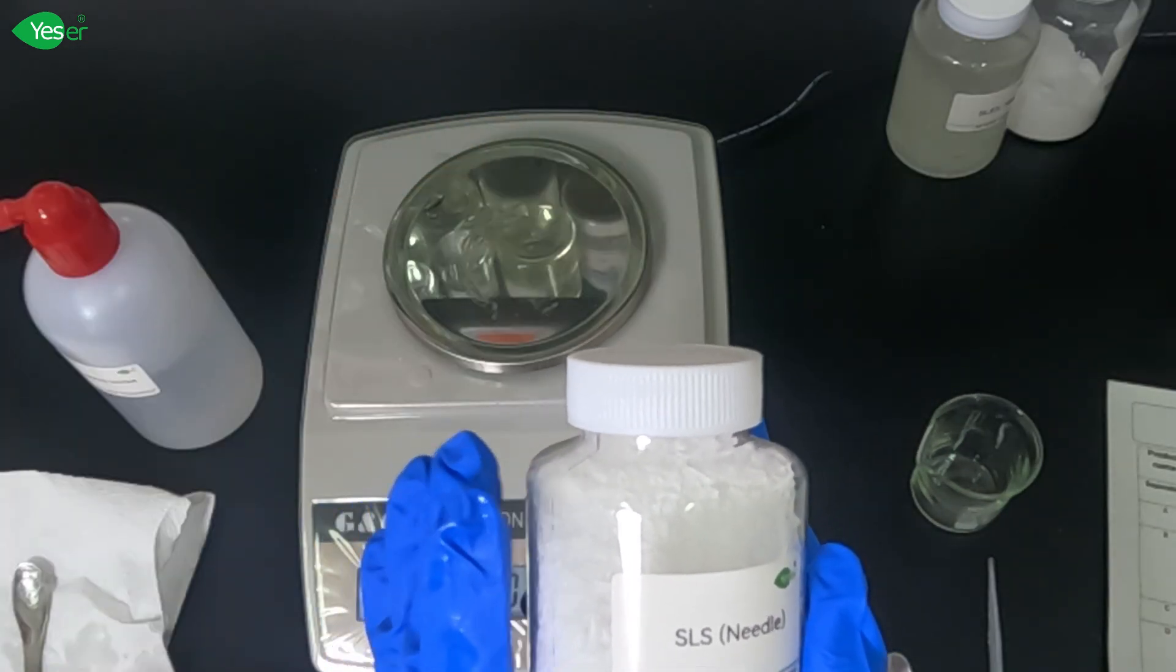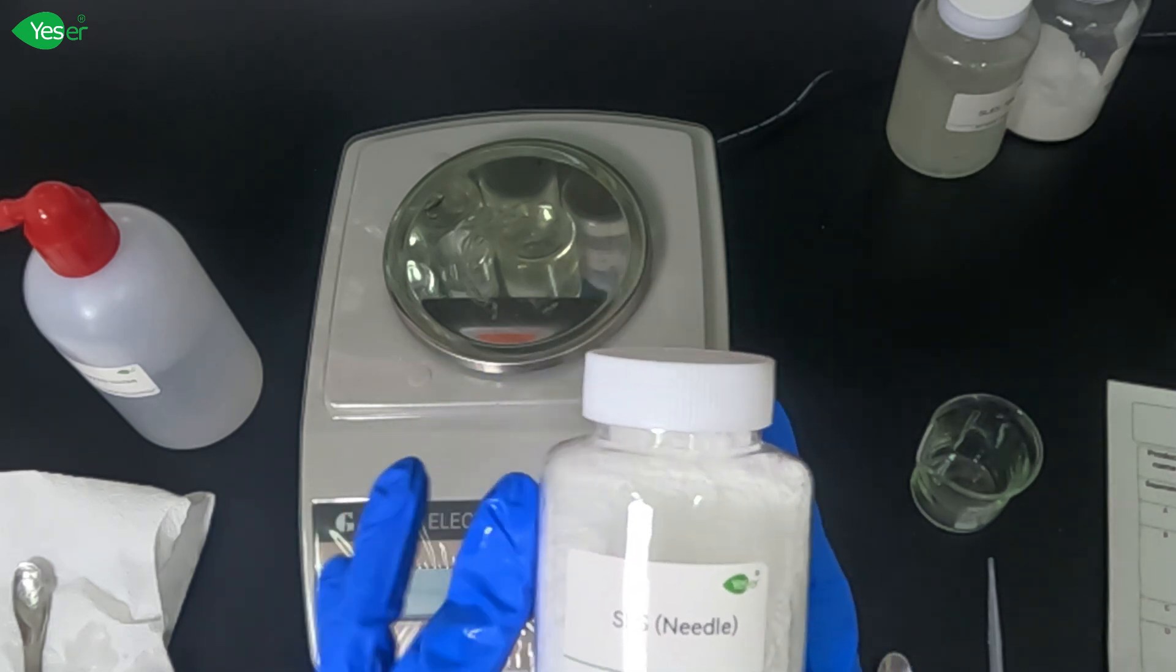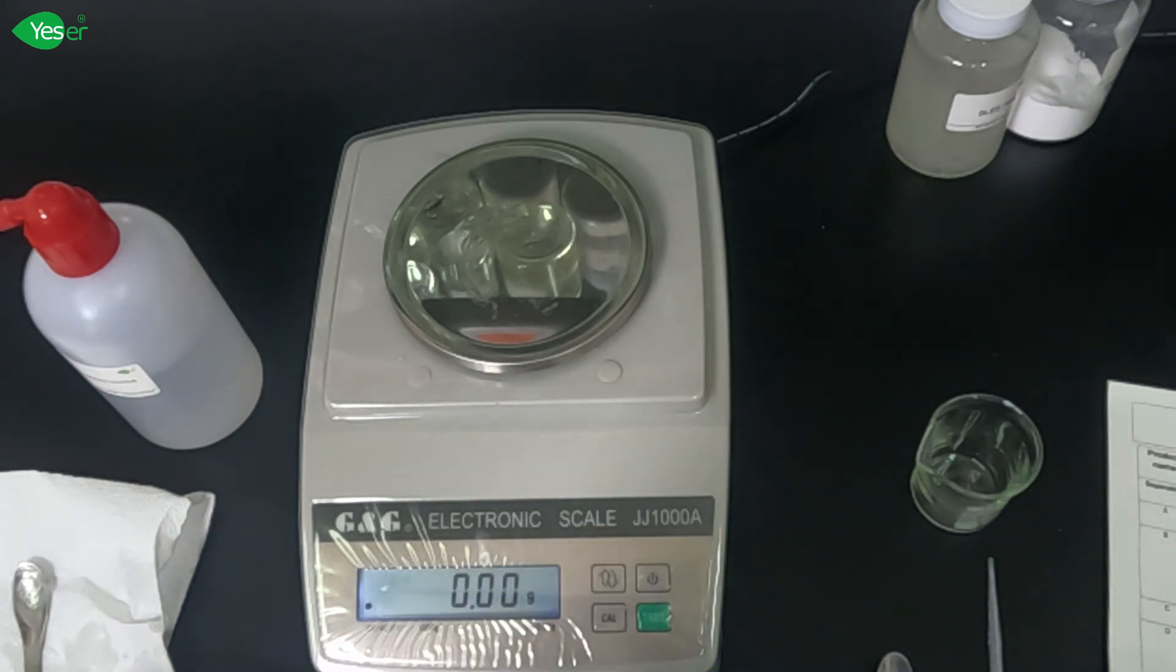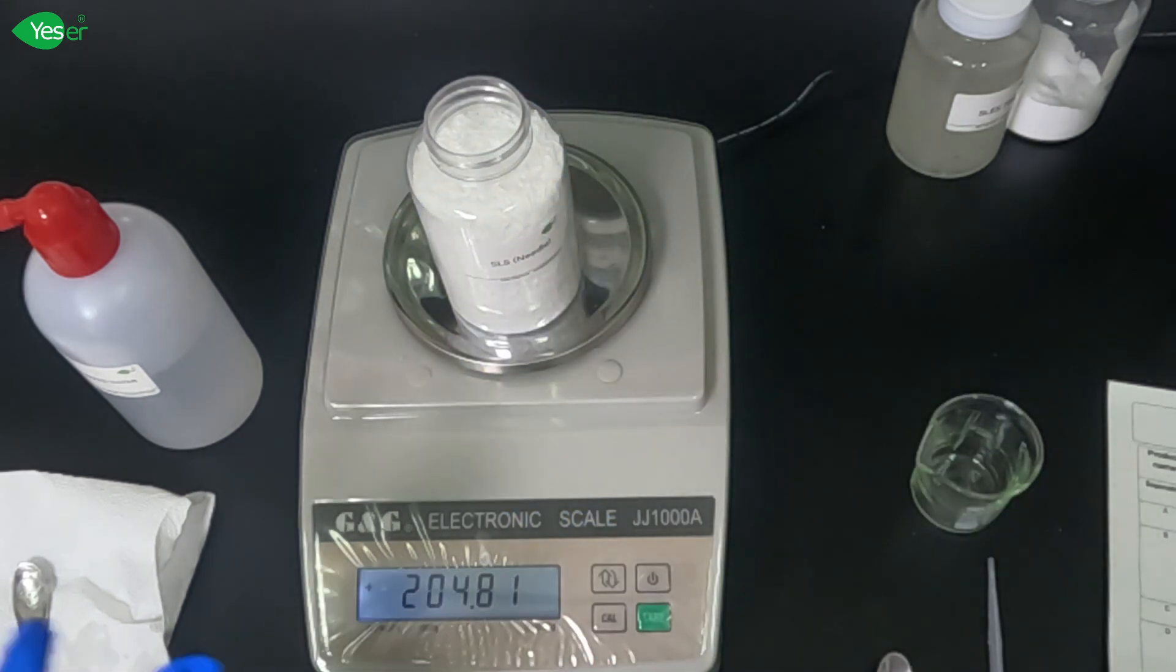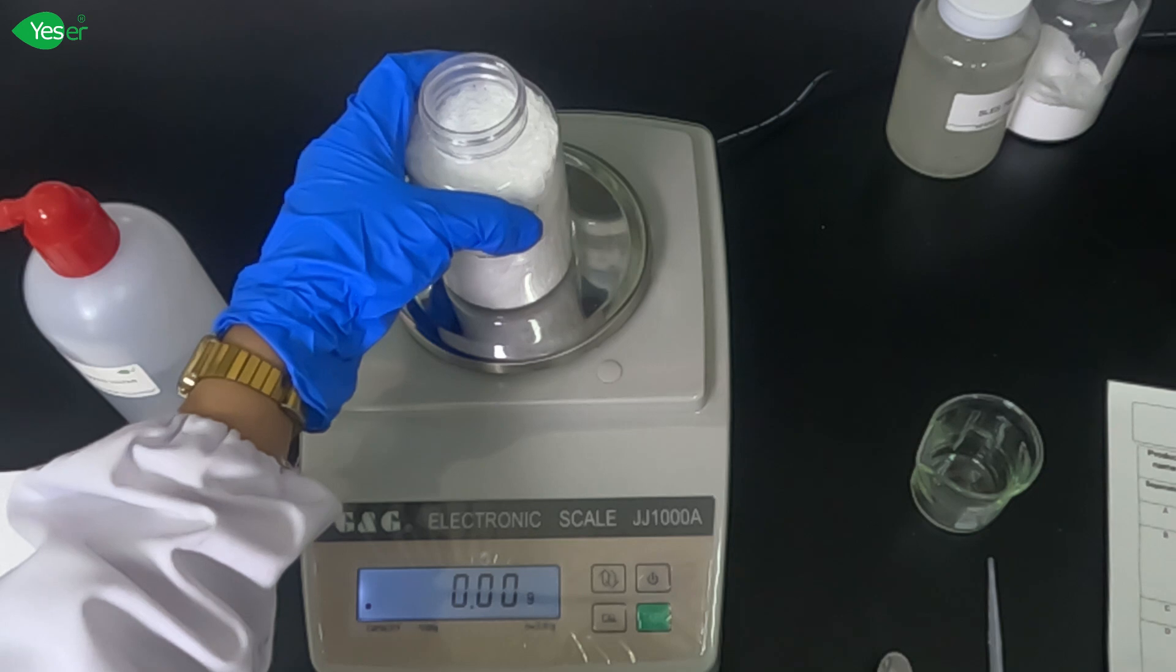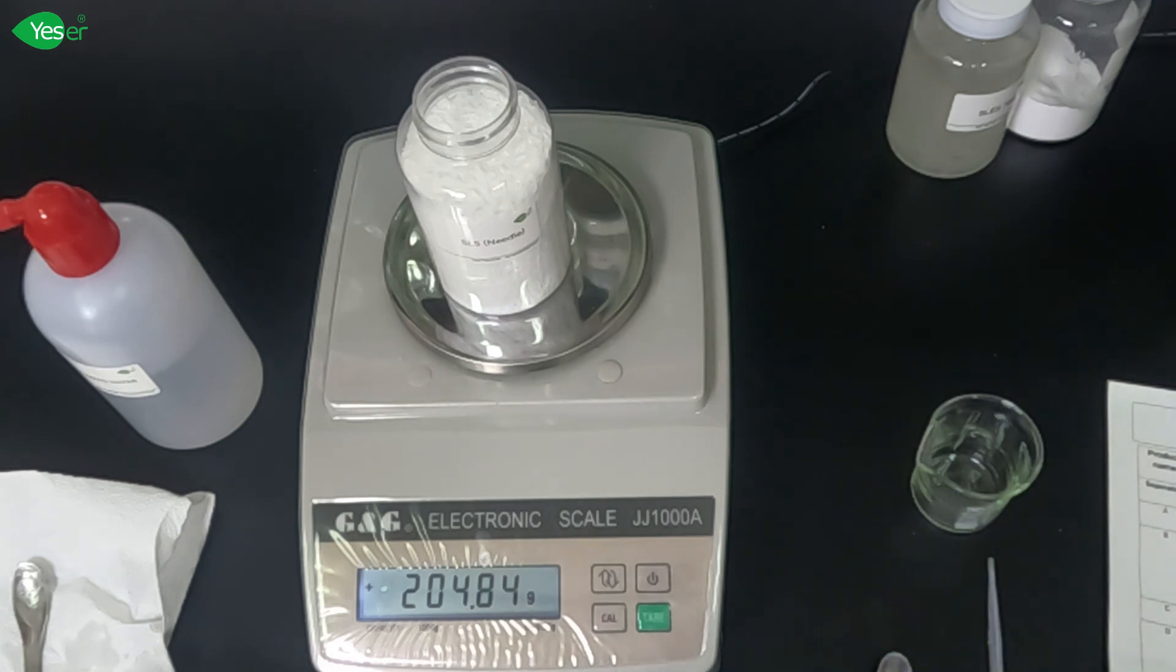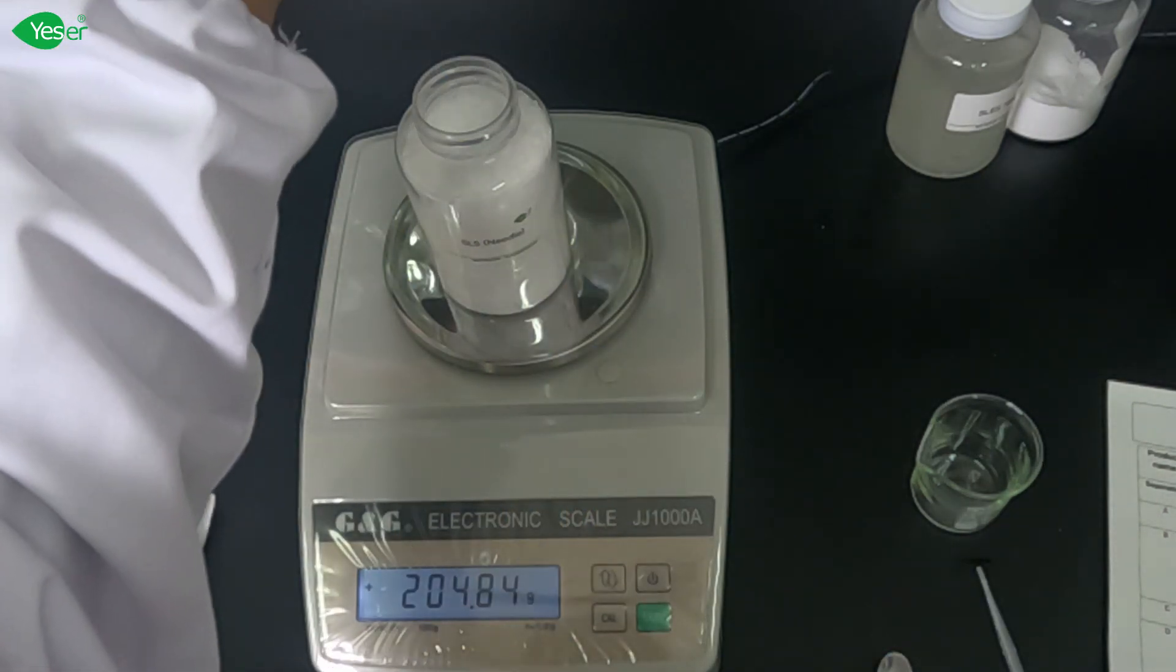After we have fully dissolved our SLES 70%, we will now add our SLS or K12 needle. SLS needle is a powerful and widely used anionic surfactant which appears as white to slightly yellow needles or granules and dissolves easily in water. This makes it an ideal choice for a wide range of formulations. In personal care products like body washes, SLS needle plays a crucial role as a secondary surfactant. Its main job is to lower the surface tension of water, which helps the body wash spread more easily across the skin, lifting away dirt and oils.